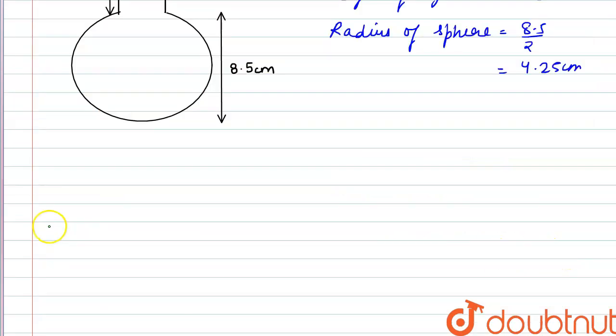So here we have to find the volume of the vessel. The volume of vessel will be equal to the volume of the sphere plus the volume of the cylinder.